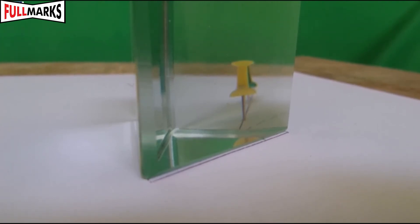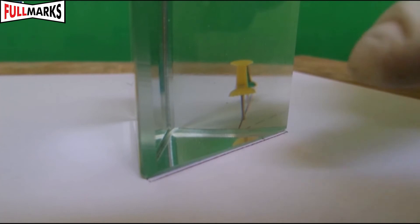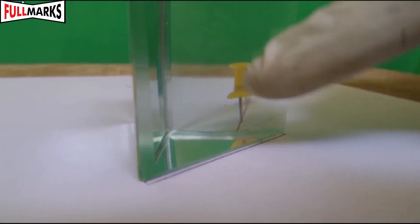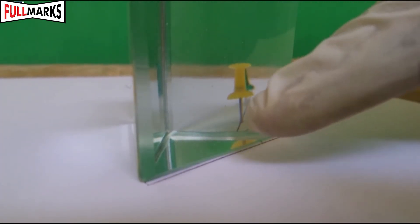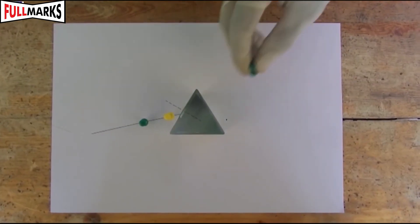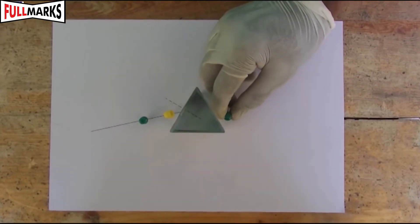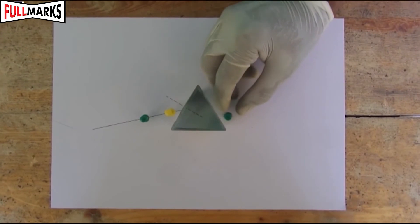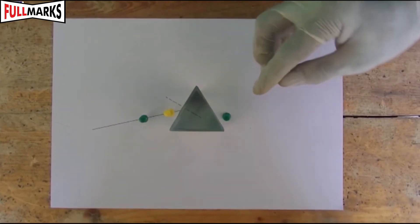Fix two more pins at points R and S vertically such that the feet of pins at R and S appear to be on the same straight line as the feet of images P and Q when viewed through the face AC.